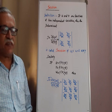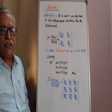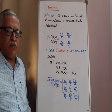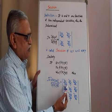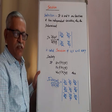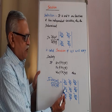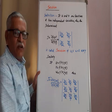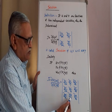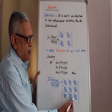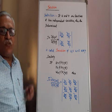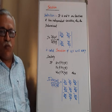Then the third-order determinant containing ∂u/∂x, ∂u/∂y, ∂u/∂z, ∂v/∂x, ∂v/∂y, ∂v/∂z, ∂w/∂x, ∂w/∂y, and ∂w/∂z — that determinant is also called the Jacobian.